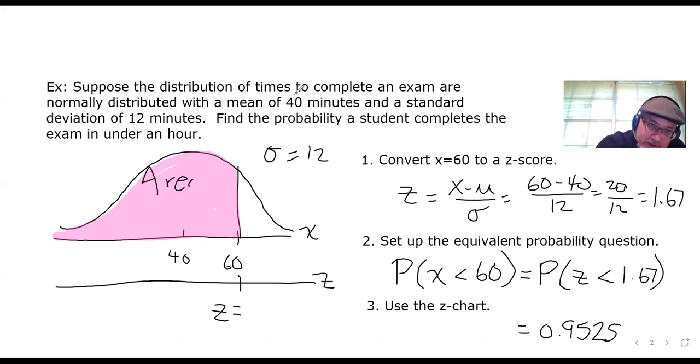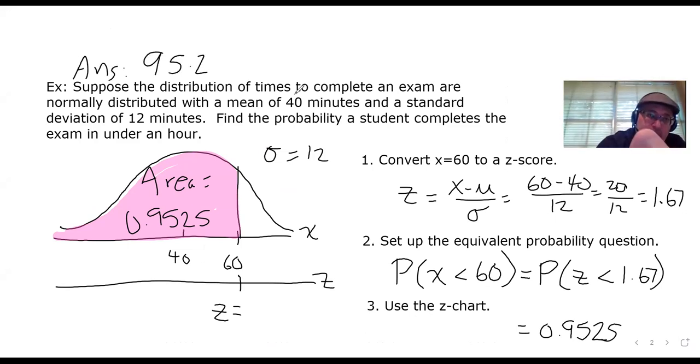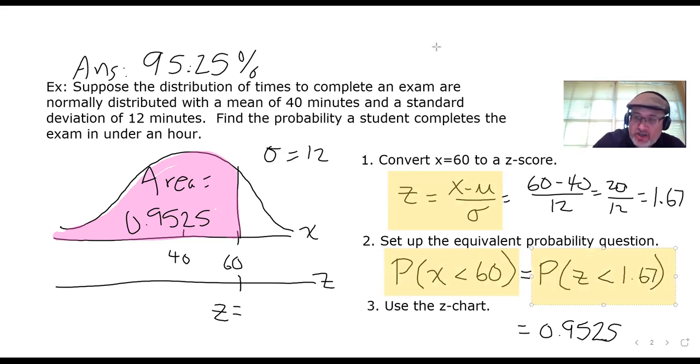If we wanted to answer the question in the context of a percent, we could say the probability a student completes the exam in under an hour is 95.25%. It's a pretty standard way to take a non-standard distribution problem whose mean isn't 0 and or standard deviation isn't 1 and convert it to a standard distribution problem using the conversion formula Z equals X minus mu over sigma to convert the desired probability question into one that our Z chart can handle. Let's take a look at one more.